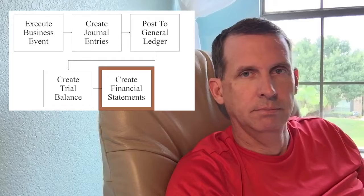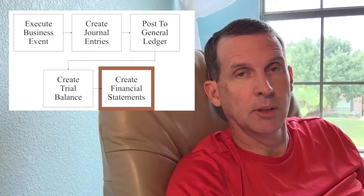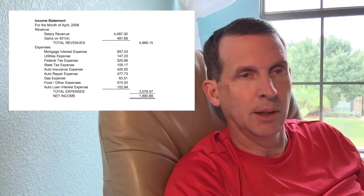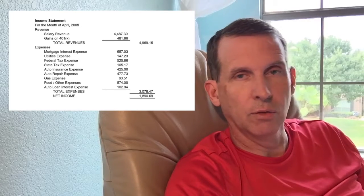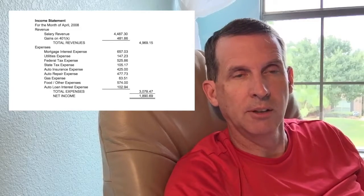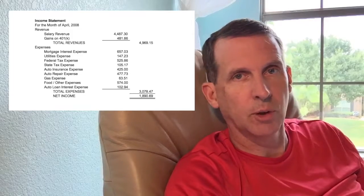Once we've created the trial balance, the last step is to actually create the reports. The trial balance is a list of balances, and we know they're the right balances as of a particular point in time. The process of creating the financial reports is pretty simple — it's simply taking the balances for assets and putting them at the top of the balance sheet, and the balances for liabilities and putting them at the bottom of the balance sheet.